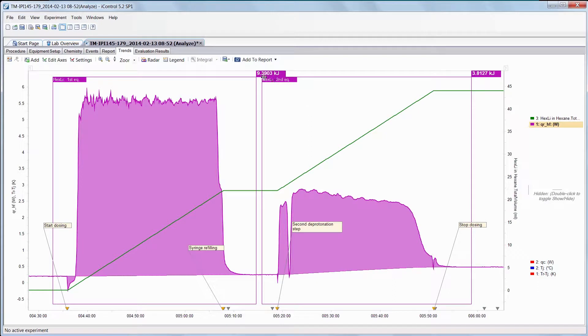So on the left side you can look at the first deprotonation step, one equivalent of hexylithium. When I look at this I conclude that the reaction is dosing controlled because the reaction heat goes up to a maximum stable level right after the start of dosing. It remains at a constant rate.